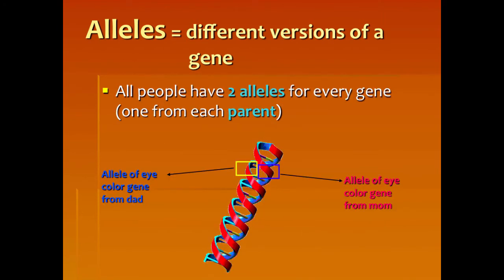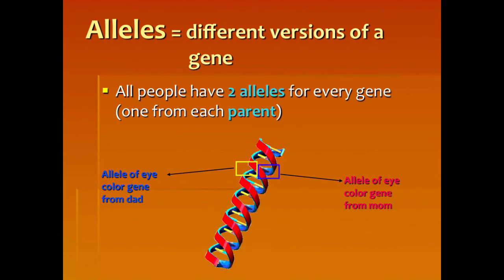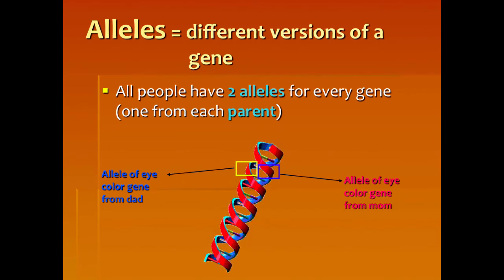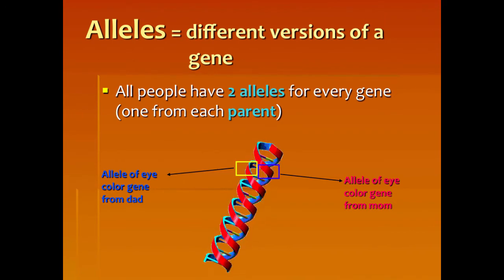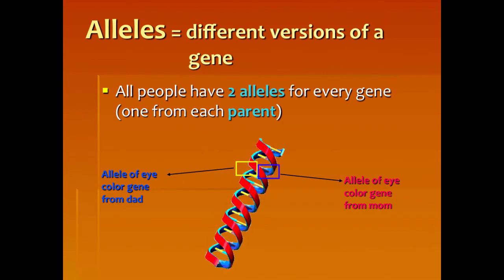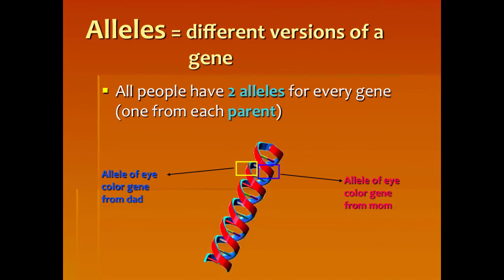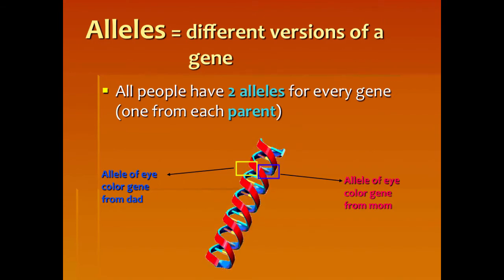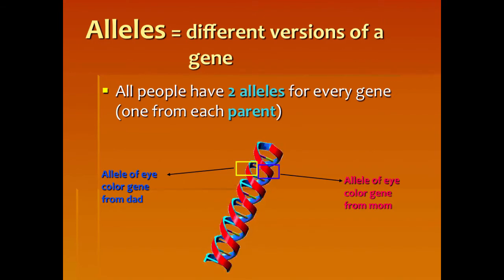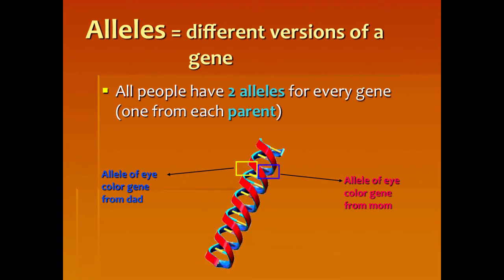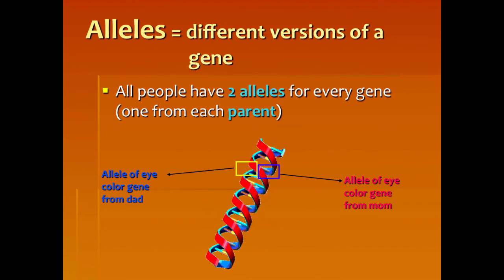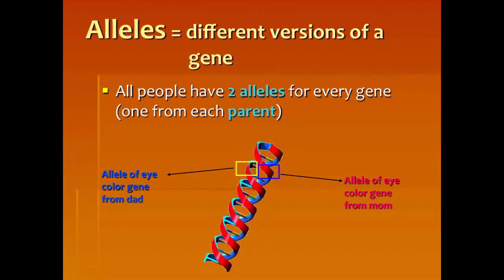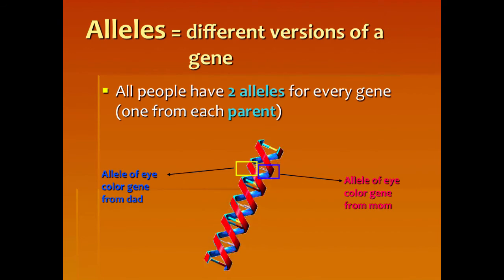All people have two alleles for every gene — one from each parent. Alleles for the eye color gene come from dad and from mom. Going back to the Robinsons, if the baby has blue eyes and we know that blue is recessive, then he obviously got a blue eye gene from his mother and a blue eye gene from his father. Even though the parents are not showing that gene, they can still have it and pass it along if it is recessive.